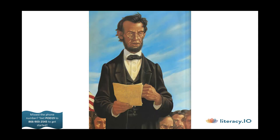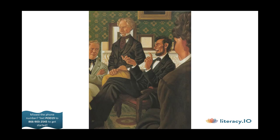The war dragged on. Lincoln grew sadder and sadder as more Americans died. He went to the Gettysburg battlefield and again reminded the nation why these men had sacrificed their lives: "Four score and seven years ago, our fathers brought forth on this continent a new nation conceived in liberty and dedicated to the proposition that all men are created equal." The Emancipation Proclamation had freed slaves only in the states and territories that were in rebellion. Lincoln wanted slavery ended in the entire nation. Most white lawmakers did not want this. He called them to the White House to convince them of what he knew was right, and finally they agreed.